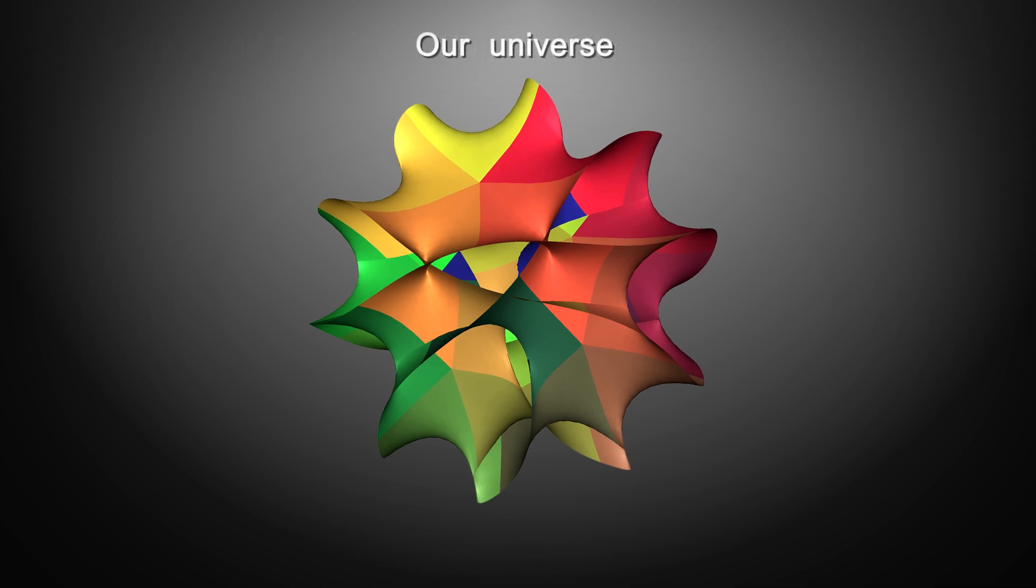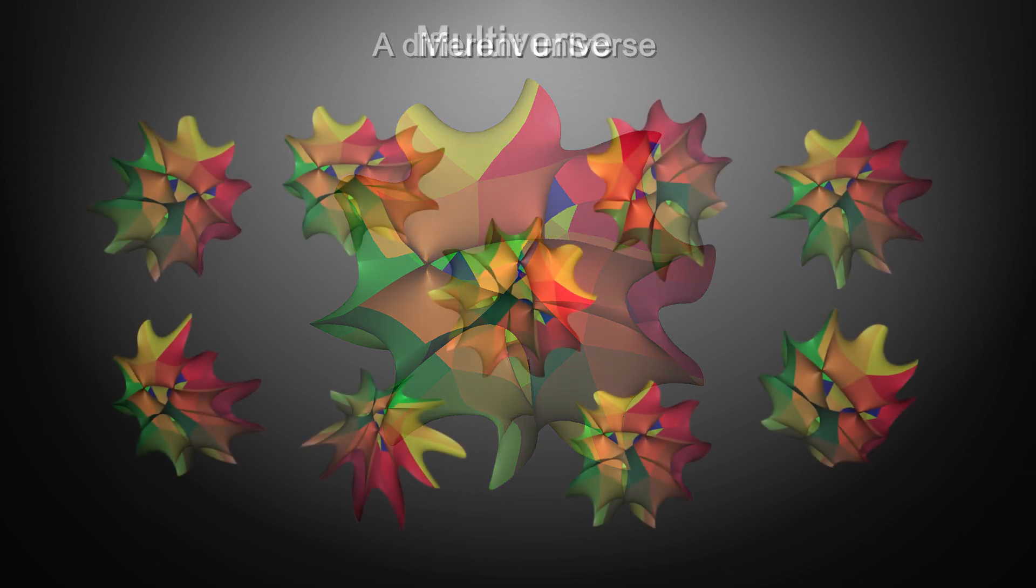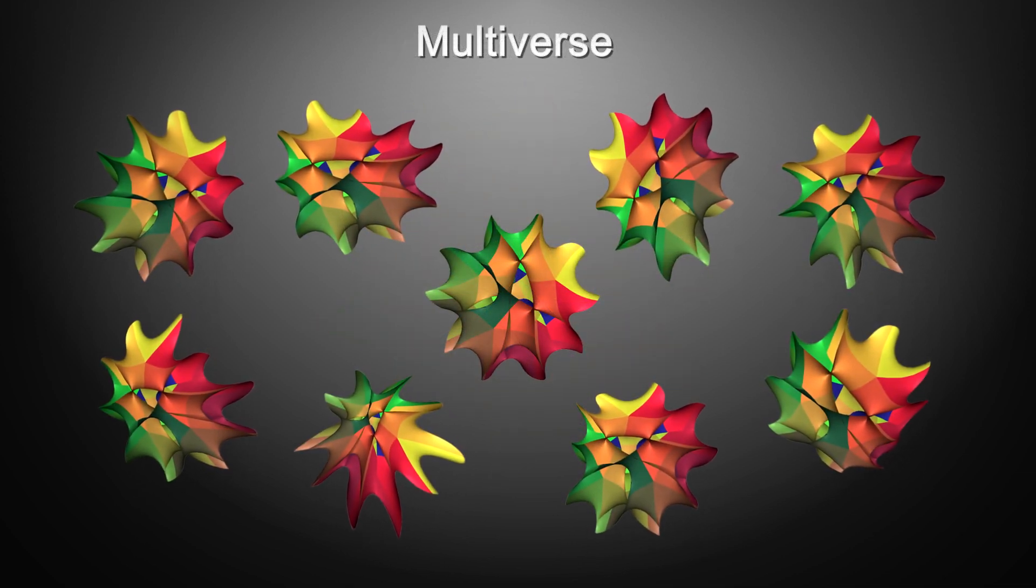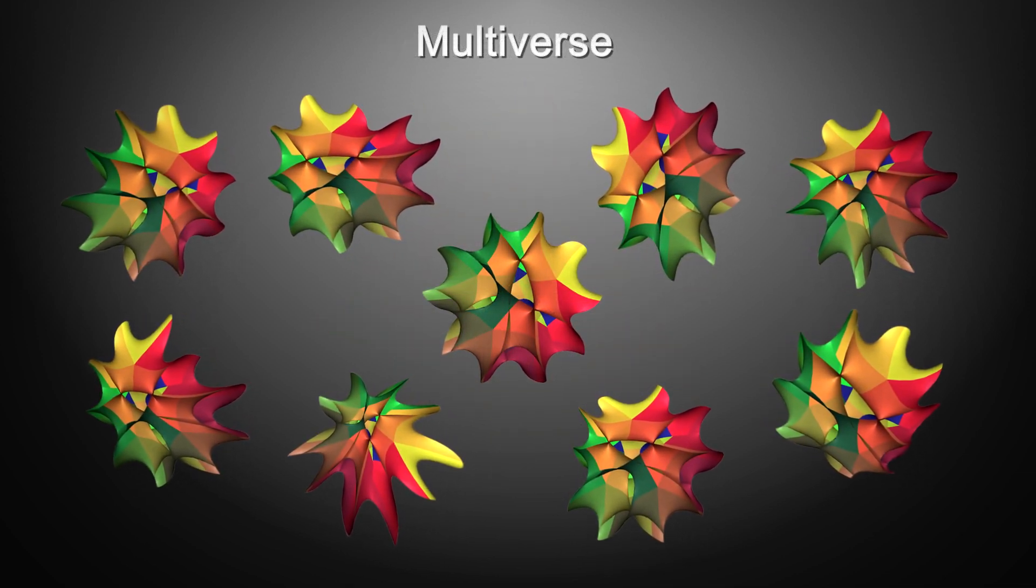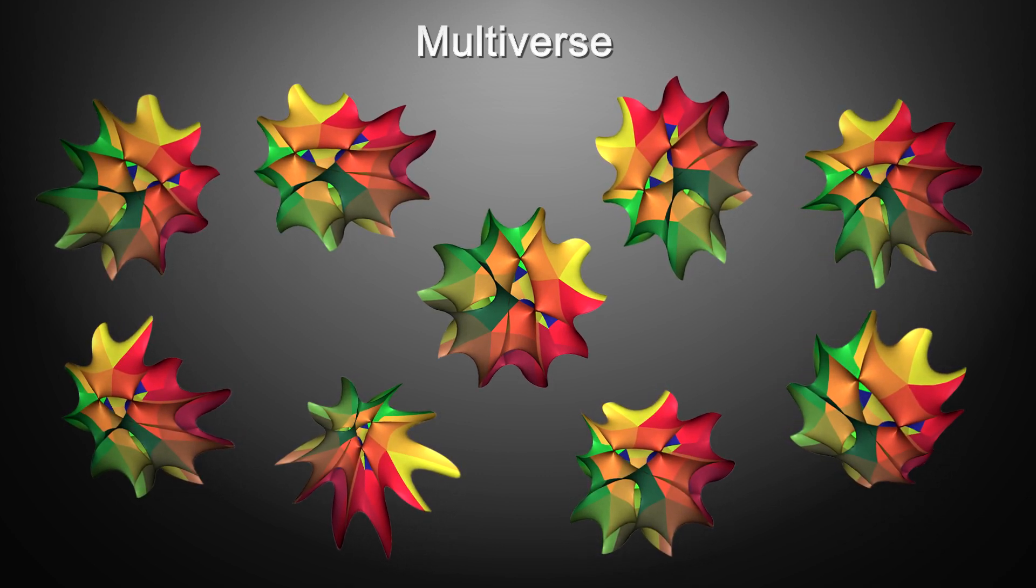It so happens that if the shape of the extra dimensions are slightly different, a different universe can emerge. These would be universes with completely different properties than ours. So this is how string theory implicates that we may be living in a multiverse, where we just happen to be on a kind of membrane of a multitude of membranes, which may contain other universes.